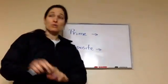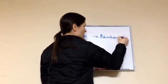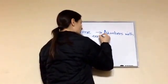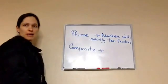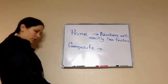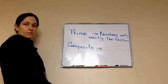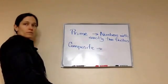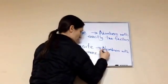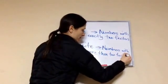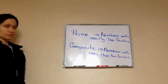Now, a prime number, let's write down the definition, and then I'll explain it. Numbers, let's just write numbers with exactly two. Yeah, write this down. I'm going to explain to you what it means in just a minute, but go ahead and write down the definition. Numbers with exactly two factors. So we need two factors. Composite is numbers with more than two factors. Now I'll explain to you what those mean once you write that definition.